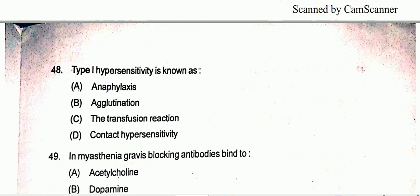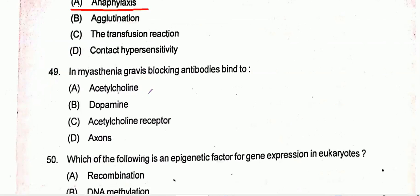Question number 48: Type 1 hypersensitivity is known as — Option A is the correct one, that is anaphylaxis. Question number 49: In myasthenia gravis, blocking antibodies bind to acetylcholine receptors.